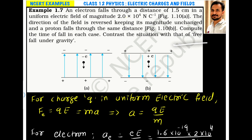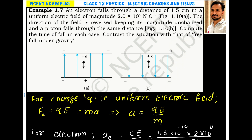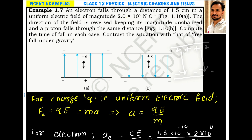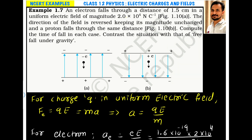We have a setup in which the electric field exists in the upward direction. An electron is allowed to fall — the electron will accelerate in the opposite direction of the electric field, so the electron will start moving downward. If we reverse the electric field and allow a proton to fall in this electric field, the proton will experience force in the downward direction. We have to compare the time of free fall of the electron and proton in the presence of this external field.